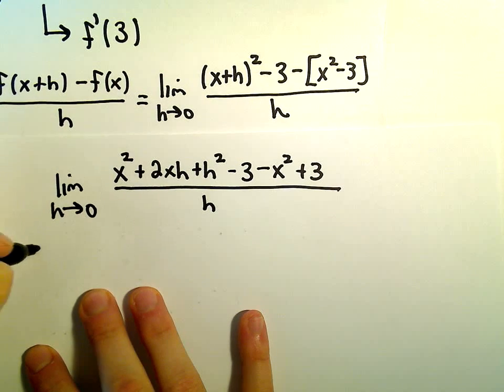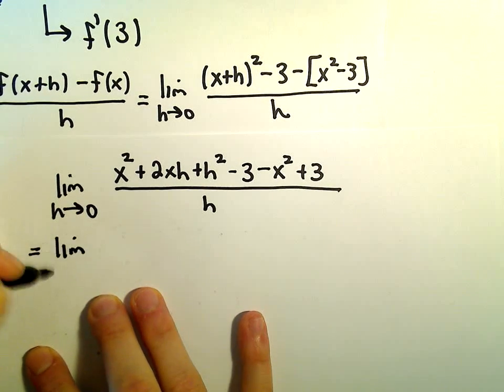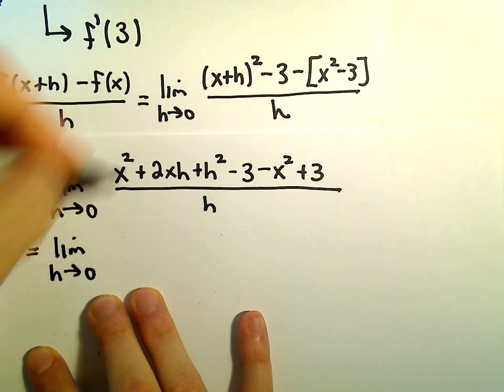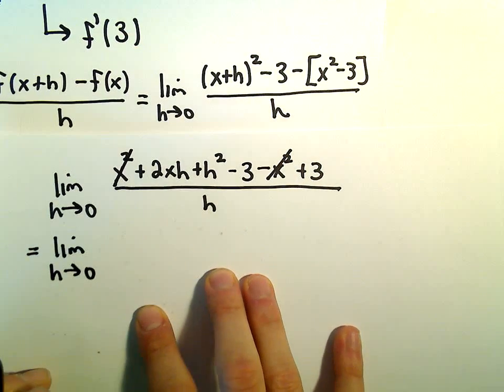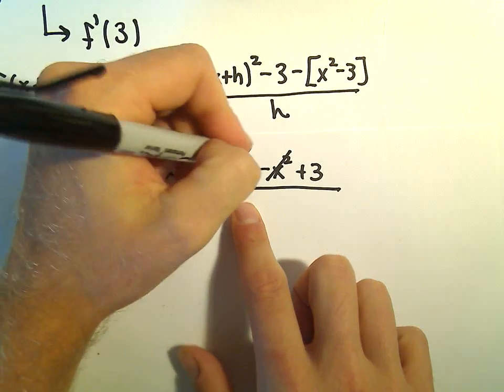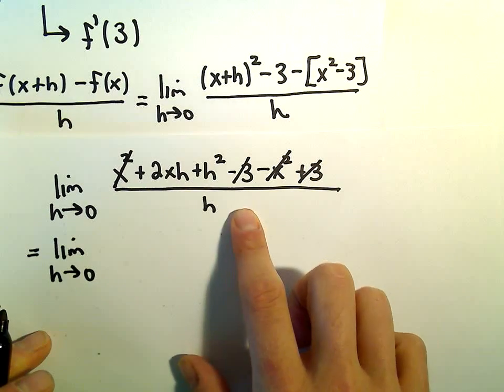Let's see, I think we can cancel out some stuff here. We've got the limit as h goes to 0. We've got x squared minus x squared, so that's gone. We've got a negative 3 plus 3, so that's also gone.